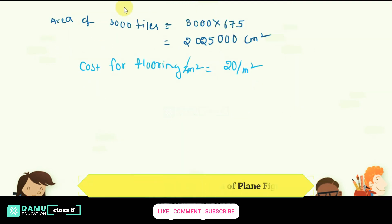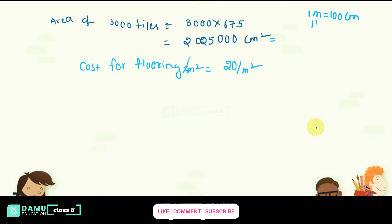The area of 3000 tiles is 20,25,000 centimeter square. The cost for flooring per meter square is rupees 20, as given. So we need to convert 20,25,000 centimeter square into meter square. Since 1 meter equals 100 centimeter, 1 meter square equals 100 into 100, which is 10,000 centimeter square.